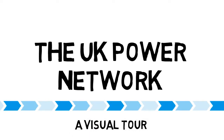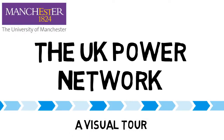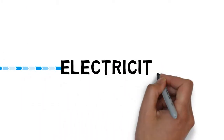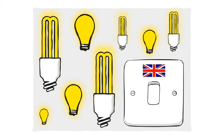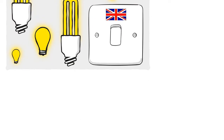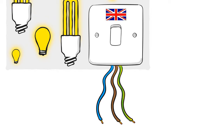Welcome to this visual animation of electrical energy created by the University of Manchester. This video is a brief intro into the electrical network of the United Kingdom. Electricity is what powers all our devices and appliances at home with the flick of a switch. But do we actually understand where this electricity comes from? This animation will take you on the journey of electricity and its different stages.